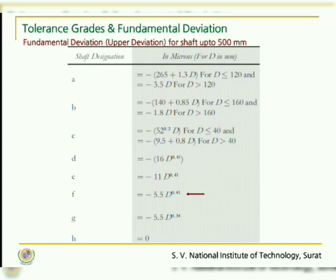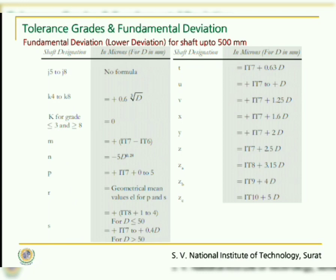Usually in the hole basis system, the fundamental deviation for the hole dimension is kept 0. For the shaft, up to 500 mm, the fundamental deviation for shafts ranging from A to H is the upper deviation, calculated using the equations given in the table. Specifically remember the equation for shaft F: upper deviation = −5.5 × D^0.41. For shafts ranging from J to Z, the fundamental deviation is the lower deviation, with different equations used for calculating each.